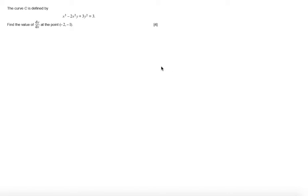In this question we're told the curve C is defined by x cubed minus 2x squared y plus 3y squared equals 3. We're asked to find the value of dy by dx at the point minus 2 minus 1.